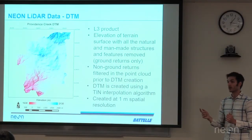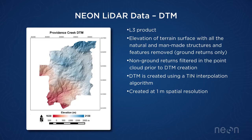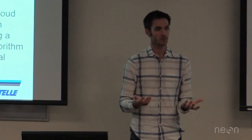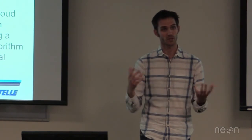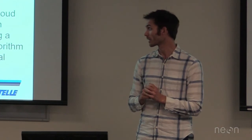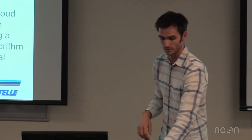Then we create a digital terrain model. We remove all of the vegetation points classified as vegetation and interpolate just the ground points, giving us just the ground surface. LiDAR is really one of the only technologies that's able to classify those ground versus vegetation points and then just get the ground, so you get an idea of what the surface actually looks like.